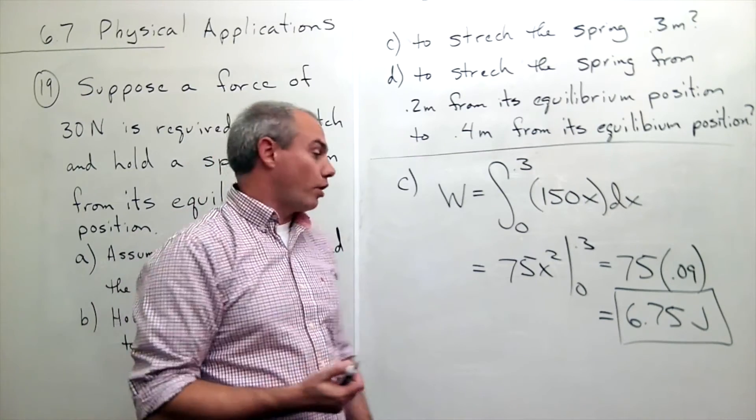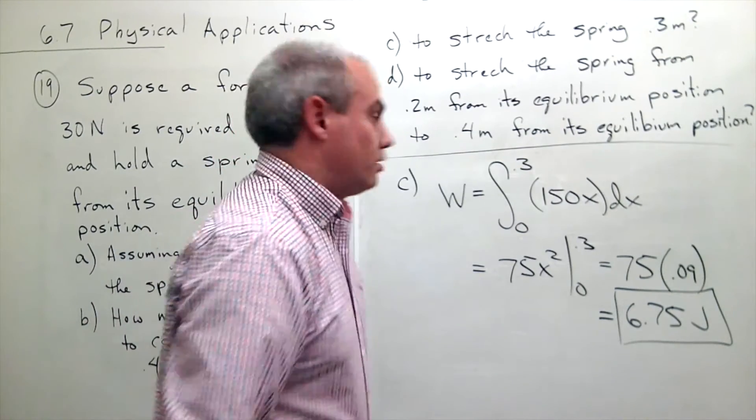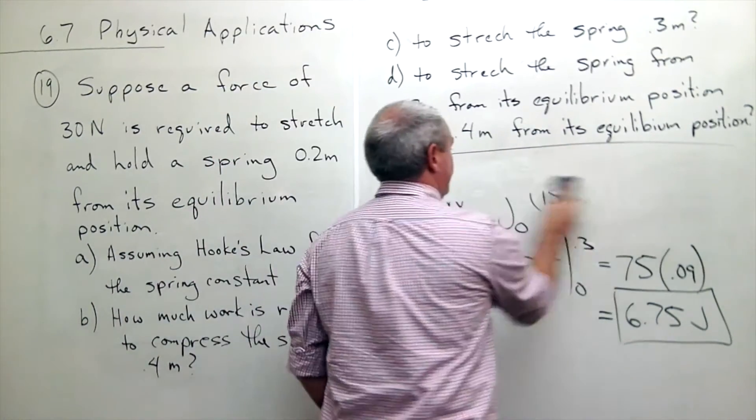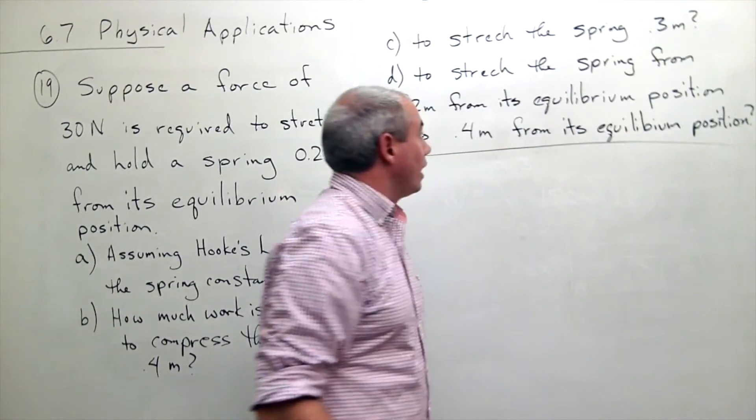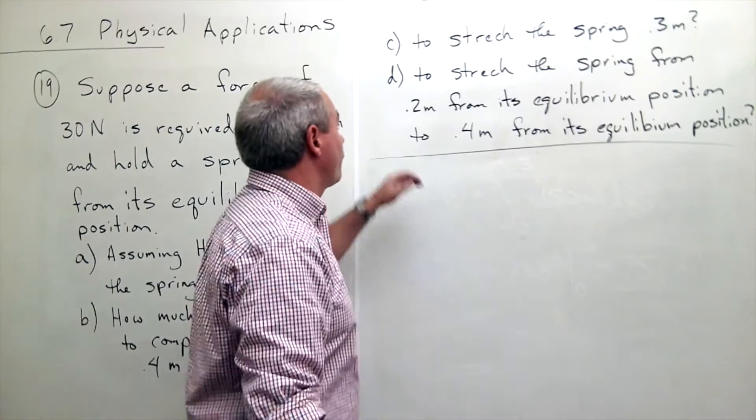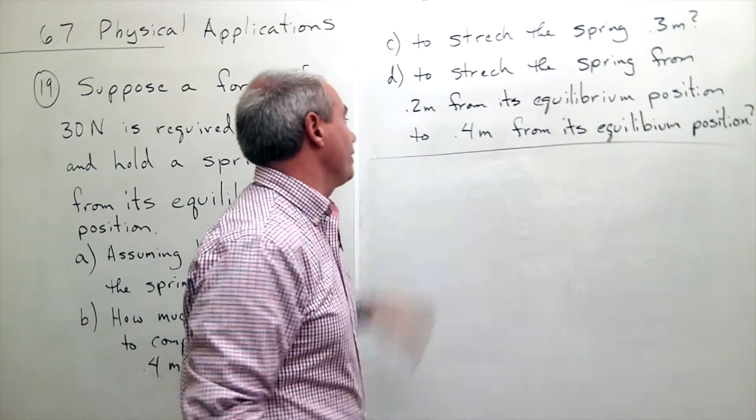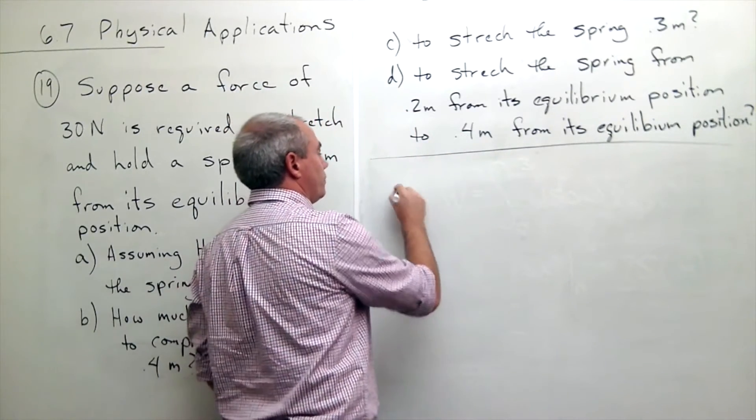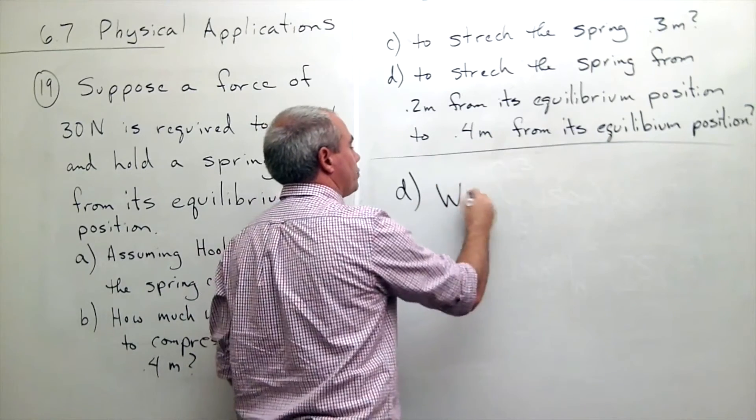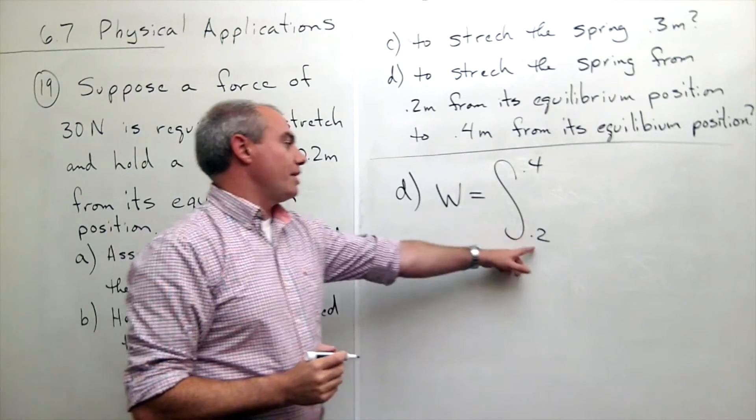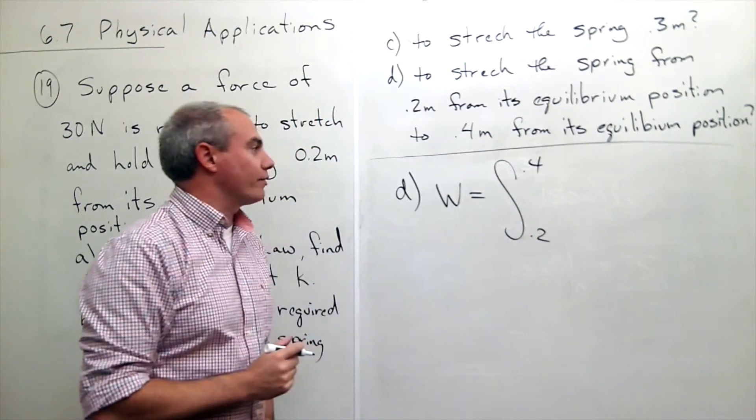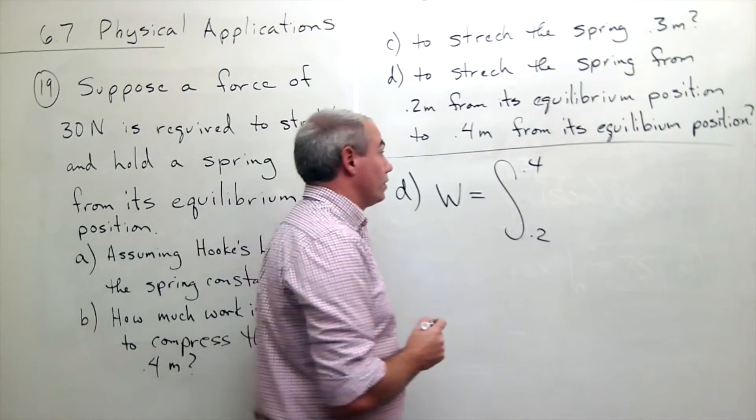Now let's look at part D. In part D we want to now stretch the spring from 0.2 to 0.4. So in part D we want to know how much work does it take to stretch this thing from 0.2 away from equilibrium to 0.4 away from equilibrium.